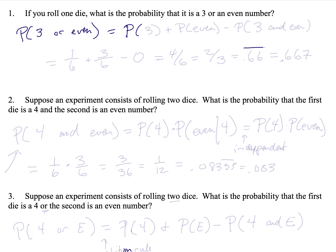By the addition rule, that equals the probability that you roll a three, plus the probability that you roll an even number, minus the probability that the die is simultaneously three and an even number. The probability of rolling a three is one out of six. The even numbers are two, four, and six, so that's three out of six. Since three is not even, the intersection probability is zero. So this is four out of six, or two-thirds, or 0.667.